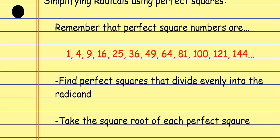The perfect squares are 1, 4, 9, 16, 25 — and it's a good idea to start recognizing these numbers because they come up a lot in math. So what we're going to do is find perfect squares that divide evenly into the radicand. The radicand is just the number under the square root — that's a probably new word. The radicand is the thing inside the square root symbol.